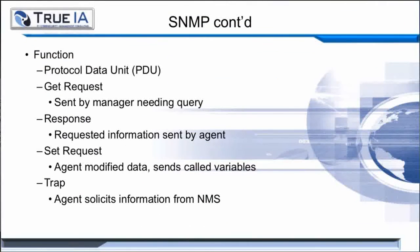They function by what's called PDUs, or protocol data units. They handle requests like the get request, which is sent by the manager needing to query its assets. The response is requested by the agent. The agent has now modified the data and then sends these called variables. And then there are SNMP traps, which are the agent-solicited information from the management system.